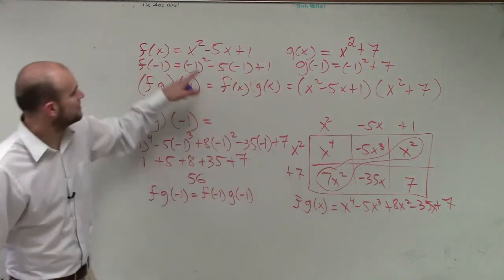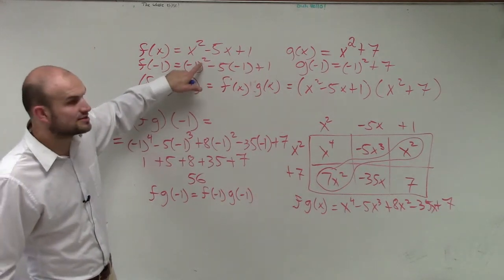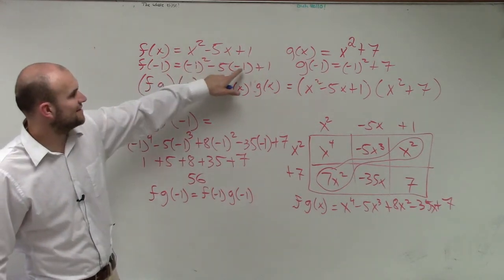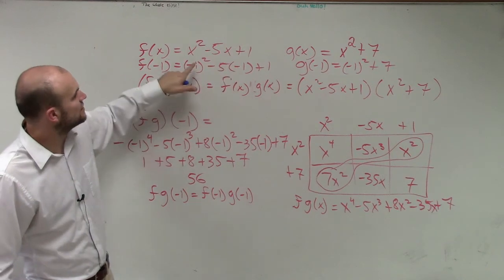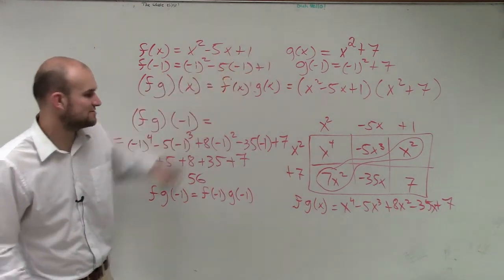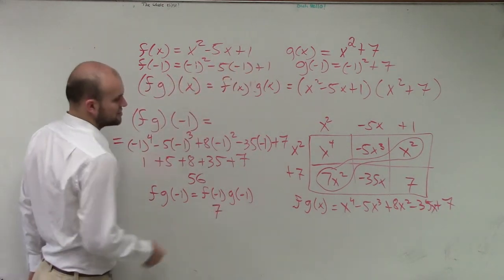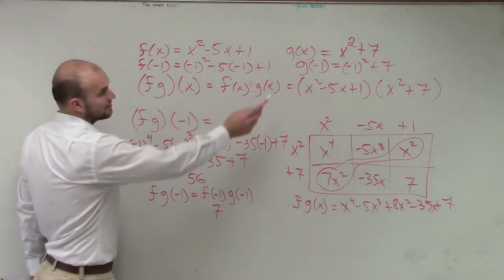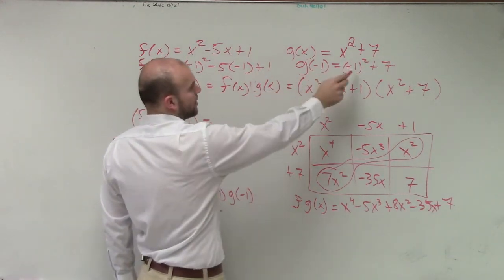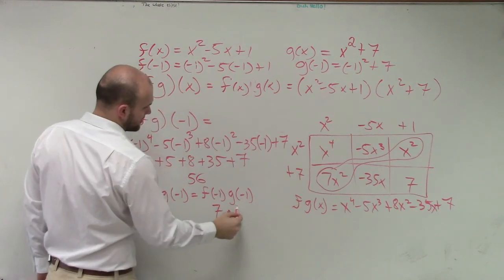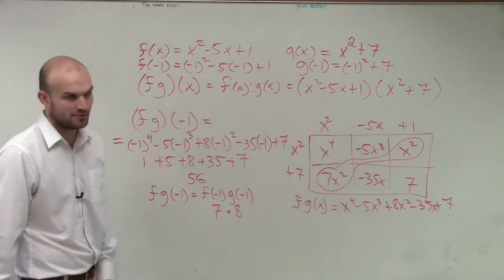So let's go and do this. Negative 1 squared is 1. Negative 5 times negative 1 is positive 5. So 1 plus 5 is 6 plus 1 is 7. So f of negative 1 is 7. And then I go through g of negative 1. Negative 1 squared is 1. 1 plus 7 is 8.